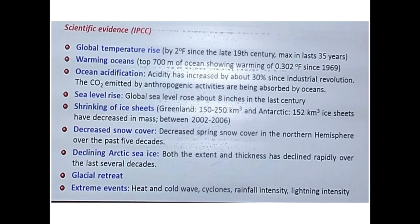Ocean acidification is another key evidence: acidity has increased by about 30 percent since the Industrial Revolution, as CO2 emitted by human activities is absorbed by oceans, making it harmful for marine and aquatic ecosystems. Sea level rise is also occurring as glaciers are melting due to global warming. Island nations are facing crucial conditions regarding their existence, and global sea level has risen about eight inches in the last century.